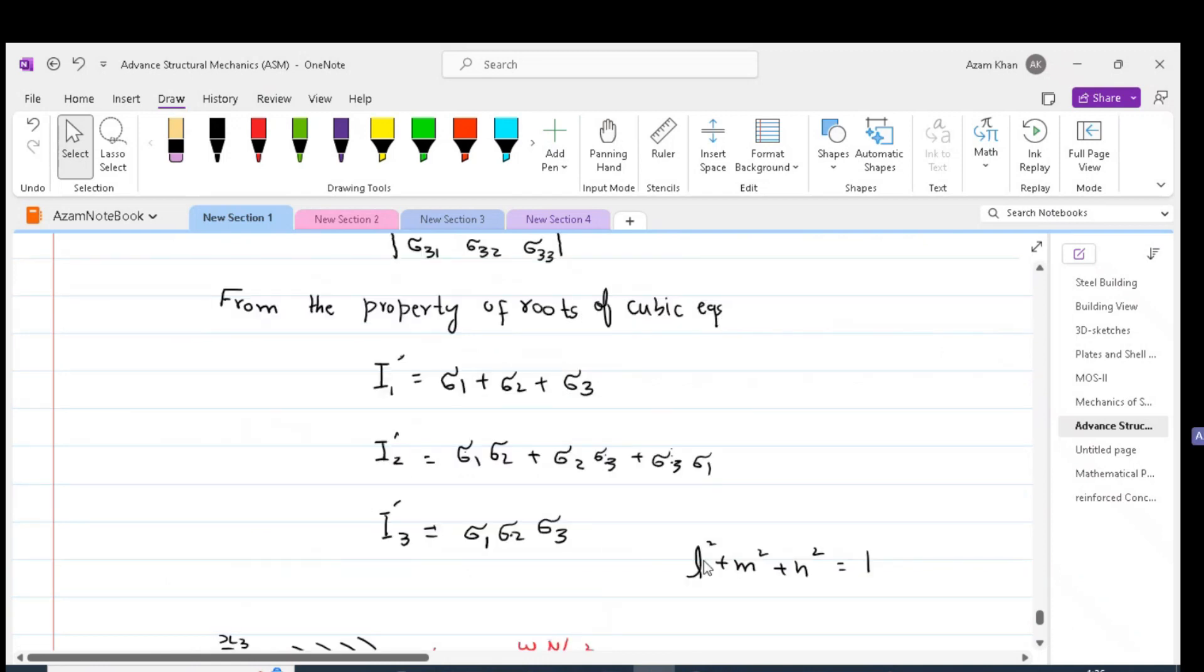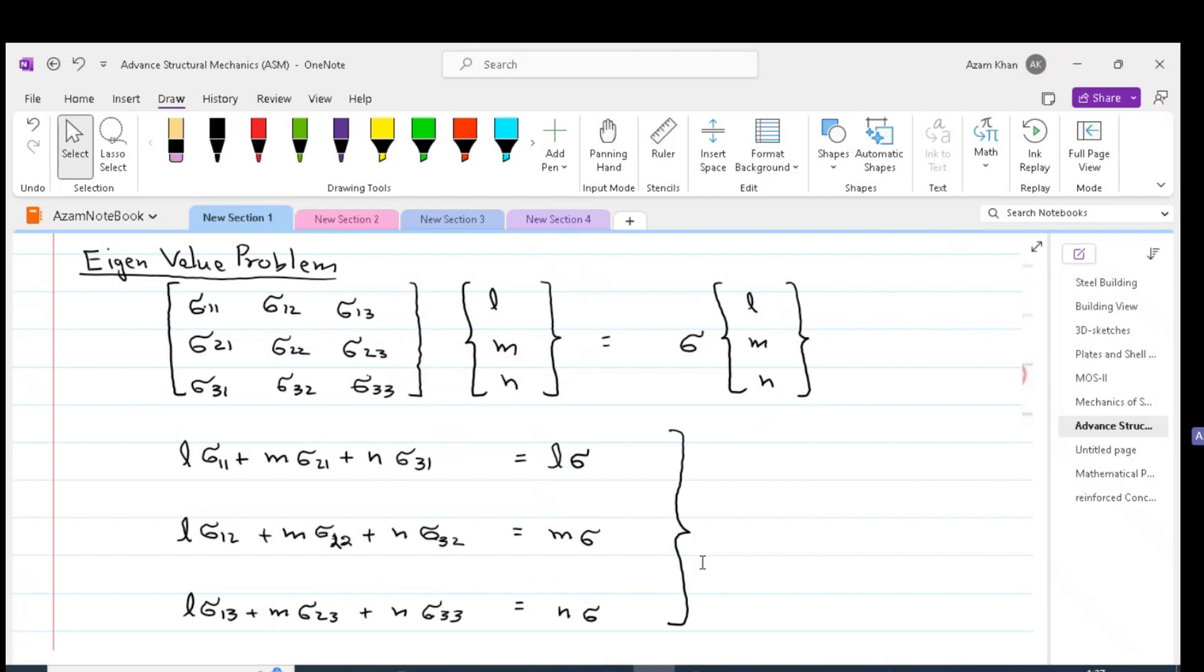And along with the identity L^2 plus M^2 plus N^2 equal to 1, we can determine the three principal directions.